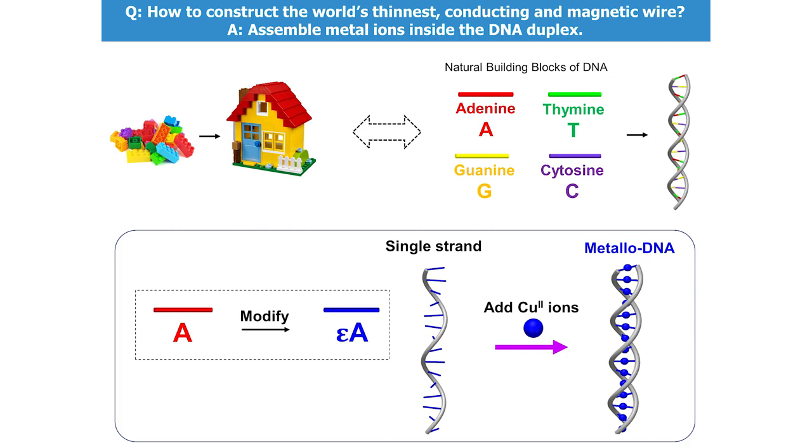My colleagues and I found that by modifying the natural building block A, you can construct a modified building block EA, which can bind to a copper ion. A pair of these EA building blocks can bind to a copper ion by forming an EA–copper ion–EA complex. So all you have to do is stack your EA building blocks on top of each other to construct a DNA strand and add the copper ions to form a double helix.